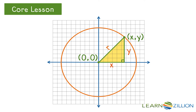Because the Pythagorean theorem describes the relationship between the leg lengths of the right triangle and its hypotenuse, we can use it here. a squared plus b squared equals c squared. By substituting x, y, and r into this equation for a, b, and c, we get x squared plus y squared equals r squared. This equation describes every point on the circle centered at the origin. Therefore, the equation of a circle centered at the origin is x squared plus y squared equals r squared.